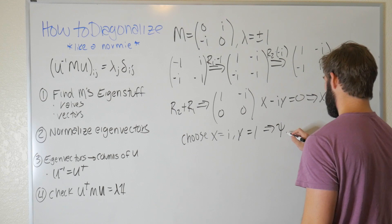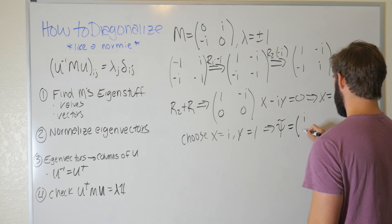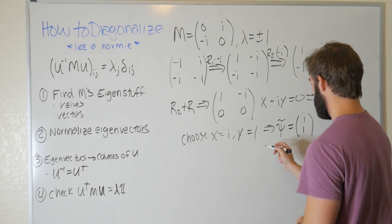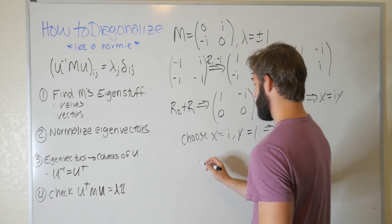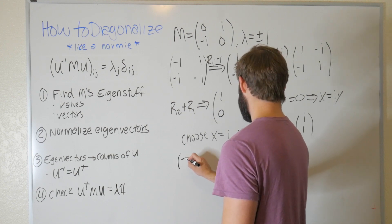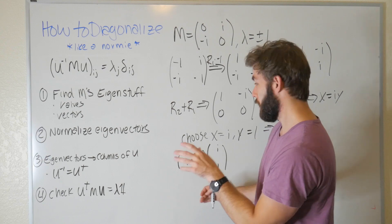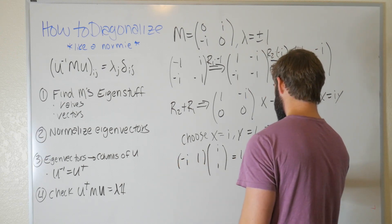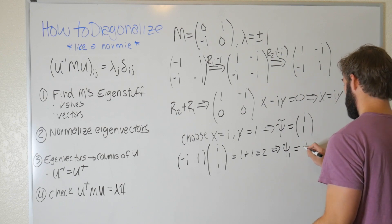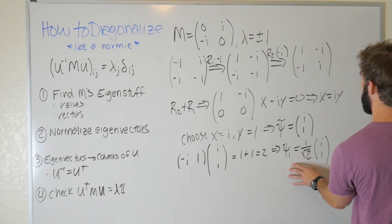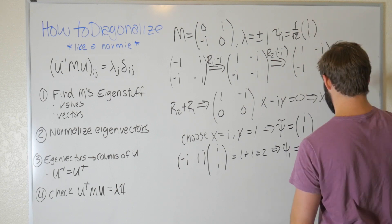This tells us our unnormalized eigenvector is [i, 1]ᵀ. To normalize it, we compute the inner product using the conjugate transpose: [−i, 1] · [i, 1]ᵀ = (−i)(i) + (1)(1) = 1 + 1 = 2. So we divide by √2, giving us the normalized eigenvector ψ₁ = (1/√2)[i, 1]ᵀ. Always normalize your vectors.